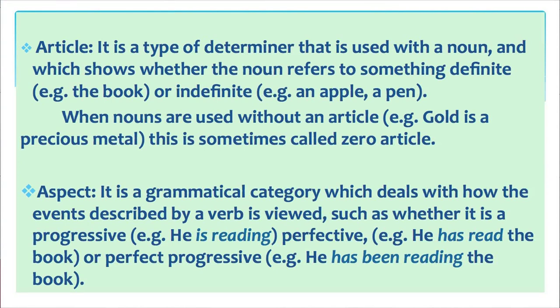Aspect: it is a grammatical category which deals with how the events described by a verb are viewed, such as whether it is progressive — for example, he is reading — perfective — for example, he has read the book — or perfect progressive — for example, he has been reading the book.